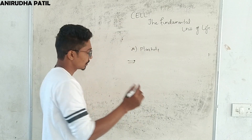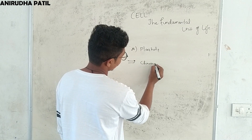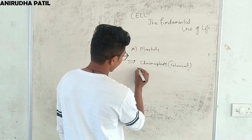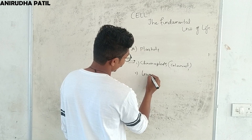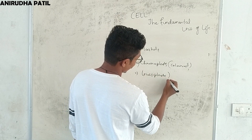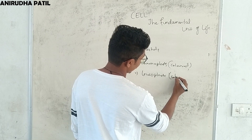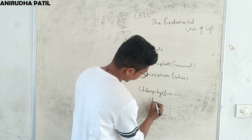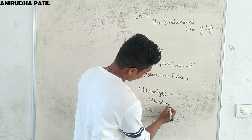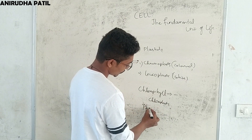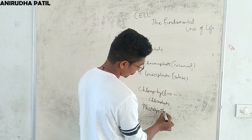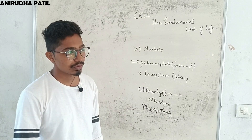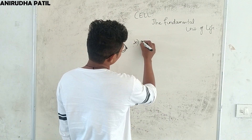The next organelle is plastids. There are two types: chromoplasts, which are colored, and leucoplasts, which are white. The plastids containing the pigment chlorophyll are known as chloroplasts, and these help in photosynthesis. Leucoplasts help in the storage of starch and oil.